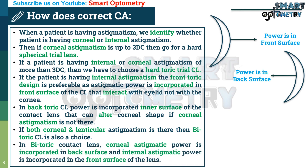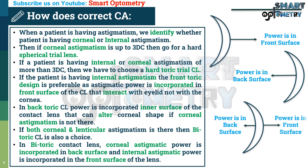In a bitoric contact lens, corneal astigmatic power is incorporated in the back surface of the contact lens and internal astigmatic power is incorporated in the front surface of the contact lens.